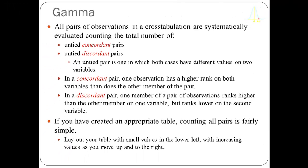When you have a discordant pair, one member ranks higher than the other on one variable but ranks lower on the second variable. Again the crucial word is rank. If you create your table appropriately — with small values in the lower left, increasing as you move up and to the right — this is a pretty easy set of statistics to calculate.